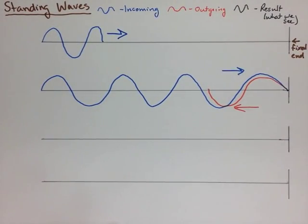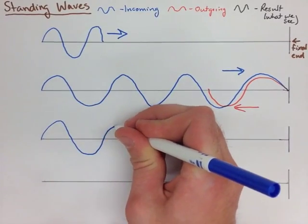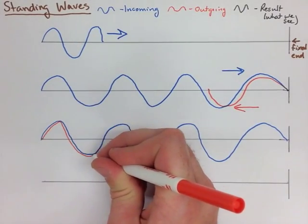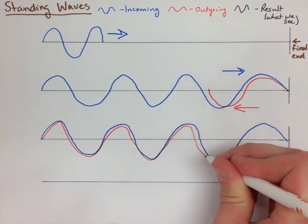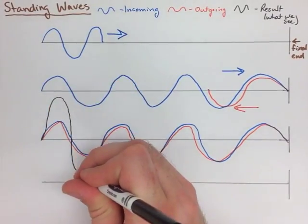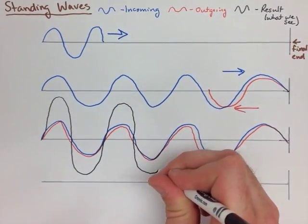What's going to occur here is we're going to get that wave go all the way down. That's our incoming wave, and then the wave's going to reflect back, and it's going to go all the way back. We're drawing it the same way, but it's reflecting off the fixed end.